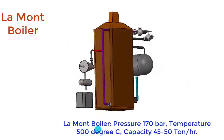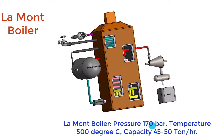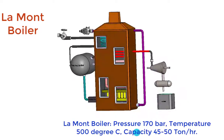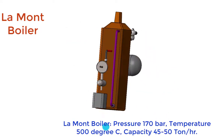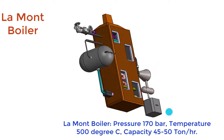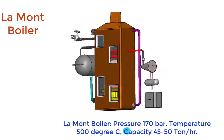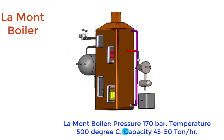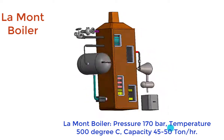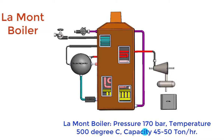This is how a Lamont boiler works at very high pressure. Pressure developed by a Lamont boiler is up to 170 bar, and steam temperature is up to 500 degrees centigrade.